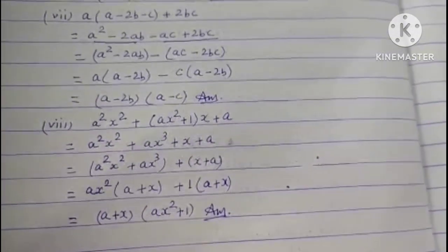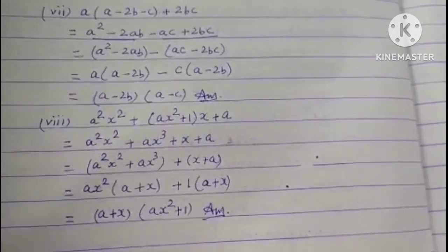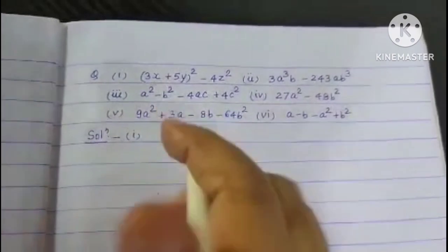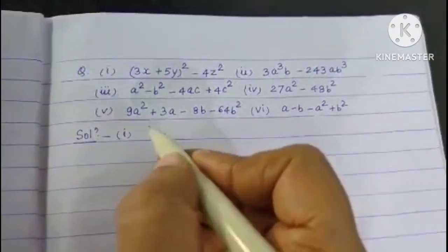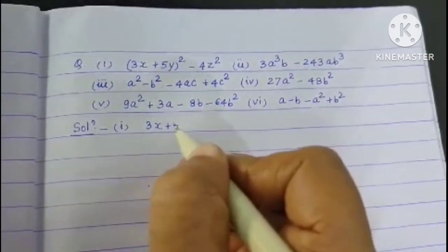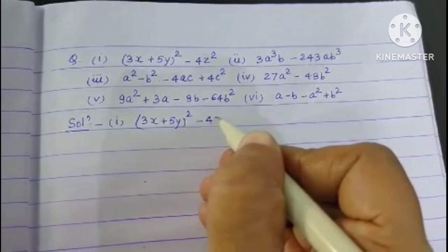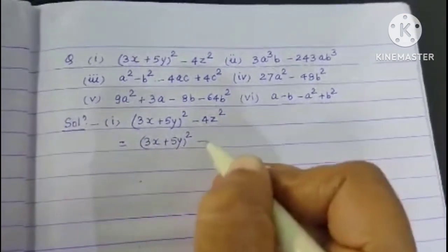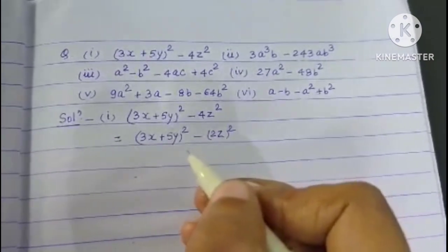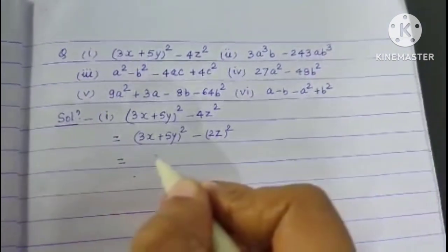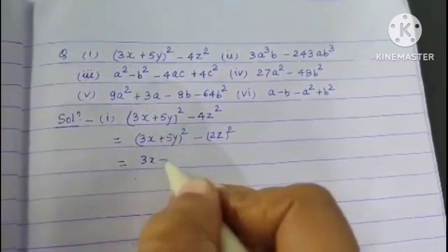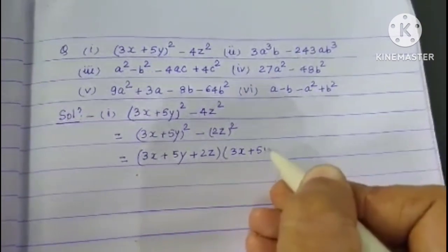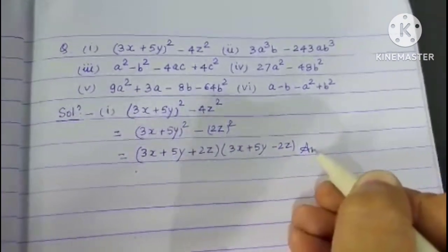Now let us take some questions from the topic we studied today — factorizing the difference of two squares. I have taken six questions. First one: (3x + 5y)² - 4z². We can write this as (3x + 5y)² - (2z)². This is of the form x² - y², so we write (3x + 5y + 2z)(3x + 5y - 2z).